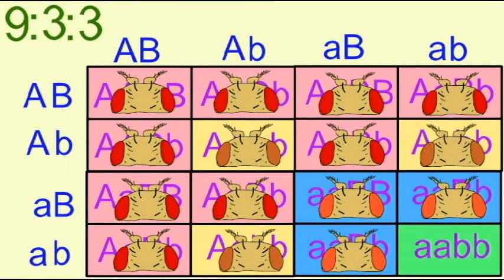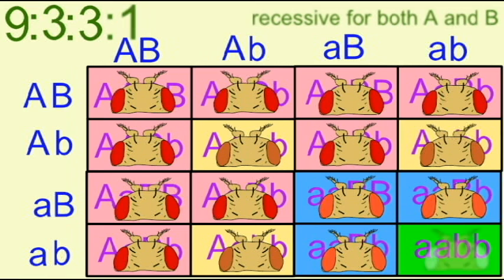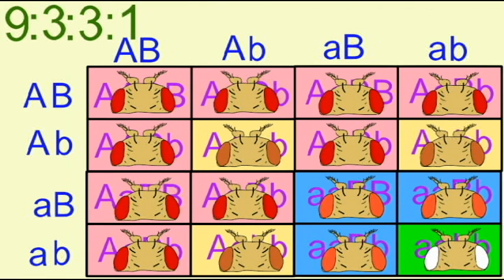So one observes a 9 to 3 to 3 to 1 ratio in the F2 generation of brick red or wild type eyes to brown eyes to scarlet eyes to white eyes. This ratio is observed because the genes brown and scarlet assort independently.